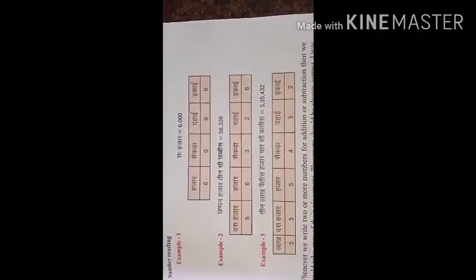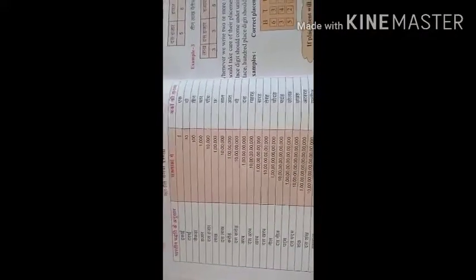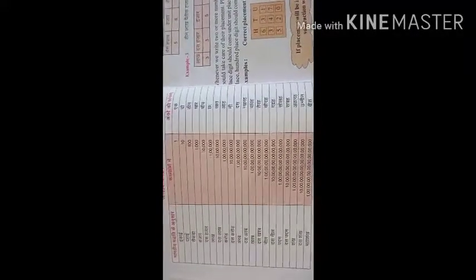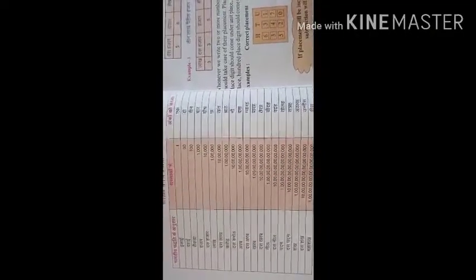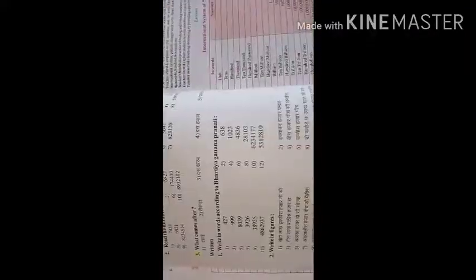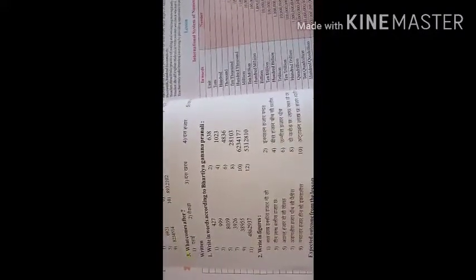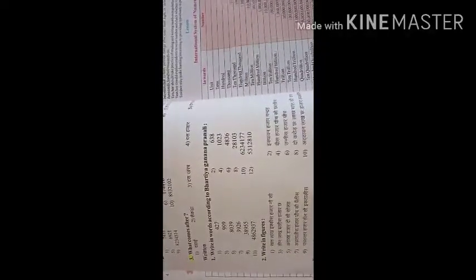Do you understand what Bharatiya Ganana Pranali is and how to write numbers in it? Once again, review Chapter 7 — this Thalika — and understand it well. You must complete your exercise questions number one, two, and three. Questions one and two you must complete in your notes copy. Write in your copy and learn it.